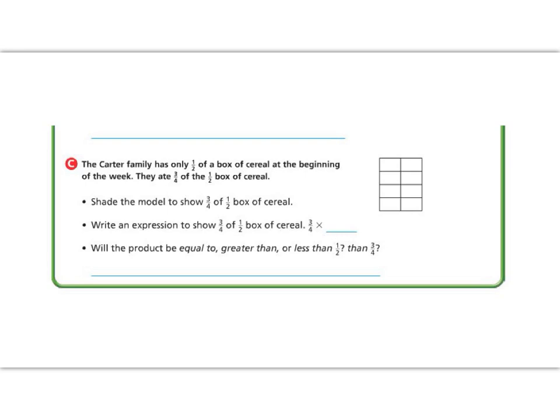Part C. The Carter family has one half of a box of cereal at the beginning of the week. They ate 3 fourths of the half of their box of cereal. Shade the model to show 3 fourths of one half box. So here's our whole box of cereal — it's split into half, so let's color in one half. Then during the week they ate 3 fourths of the half, and you can see it's split into fourths now. I'm going to color in one fourth, two fourths, three fourths — three fourths of my half — which would be three fourths times one half.